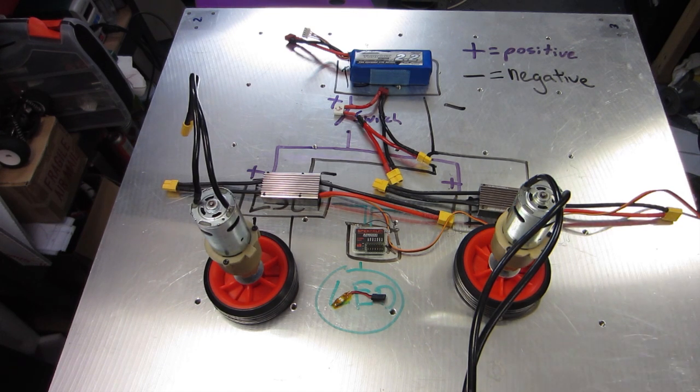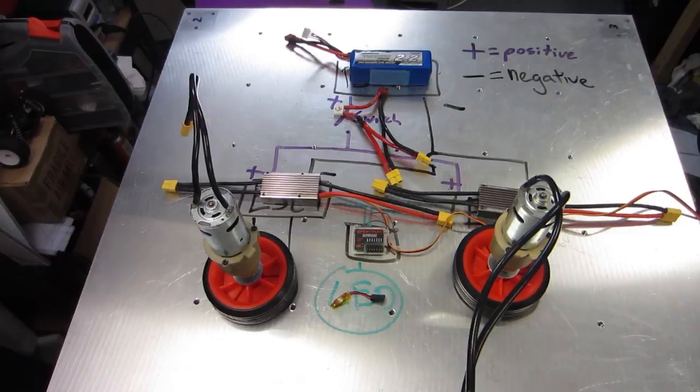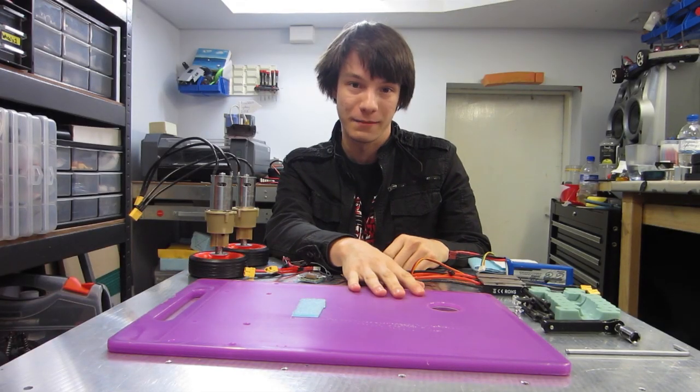That's how a basic wiring diagram works for your combat robot platform. With that out of the way, we can now start assembling our robot platform.